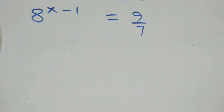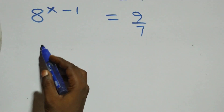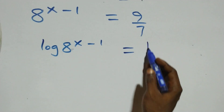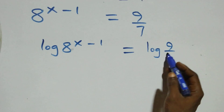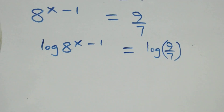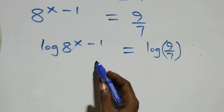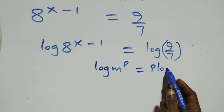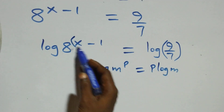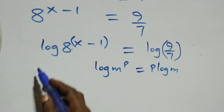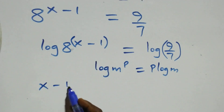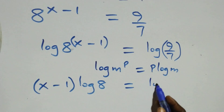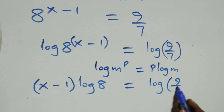Next step, we take the log on both sides. That is, log of 8 raised to power x minus one equals log of 9 over 7. We apply the power rule of logarithms: log m raised to power p is the same thing as p log m. Here x minus one is the power, so that comes out and we have x minus one times log 8 equals log 9 over 7.